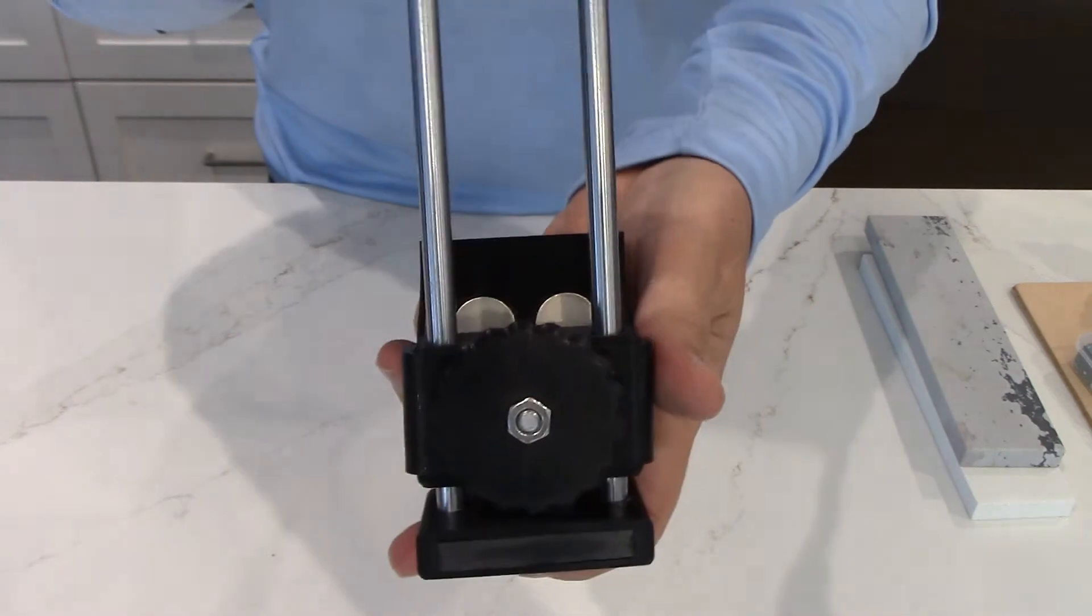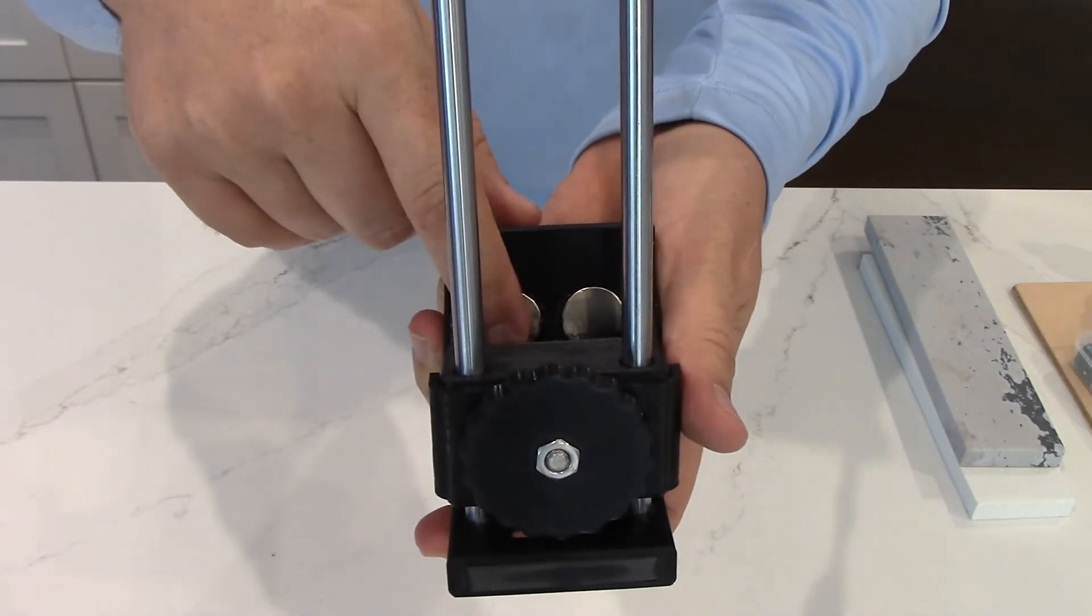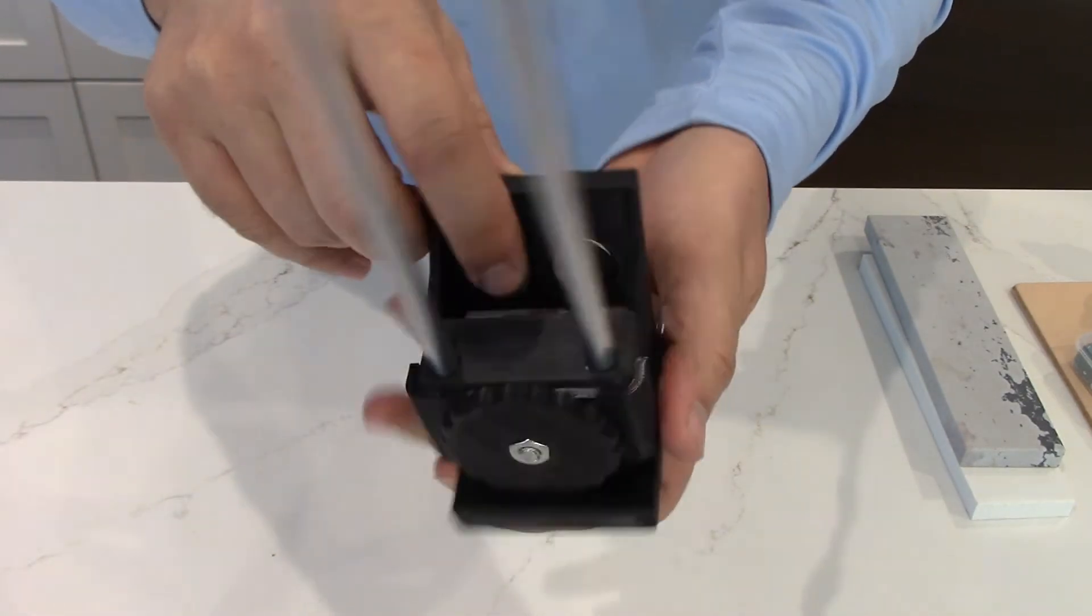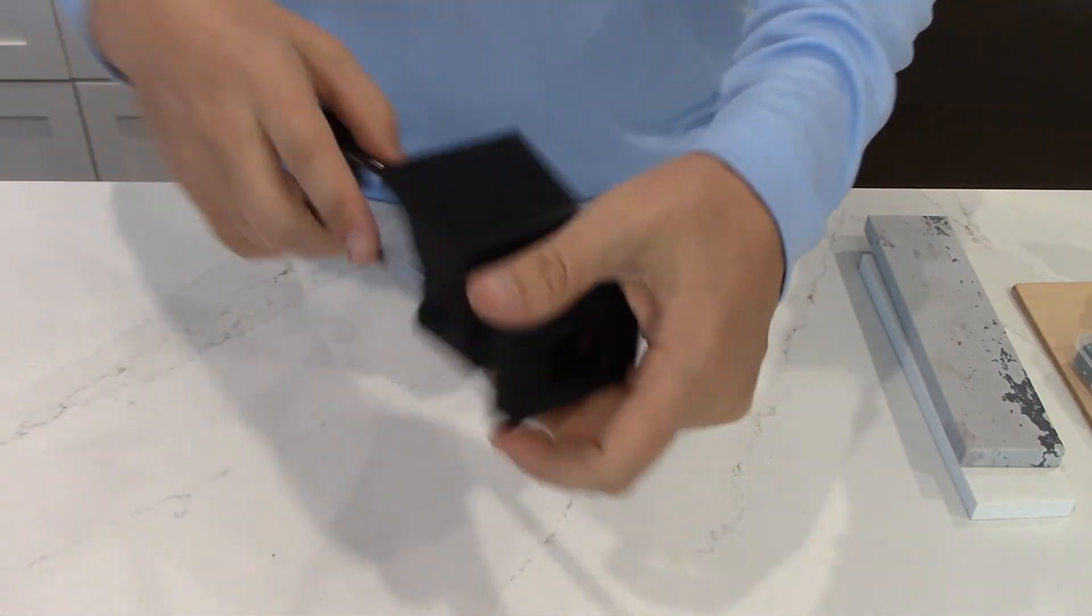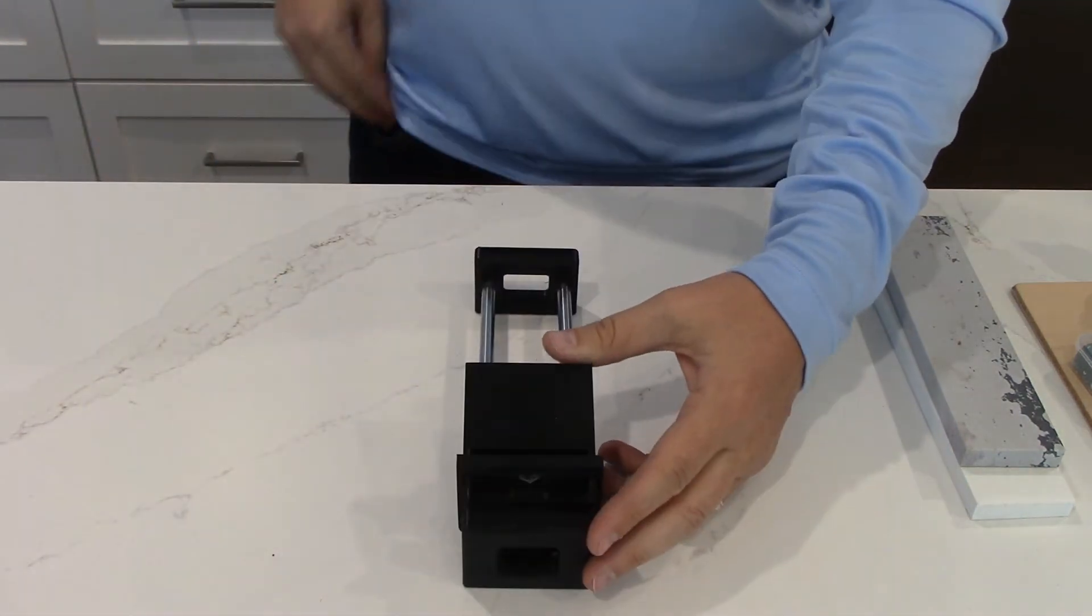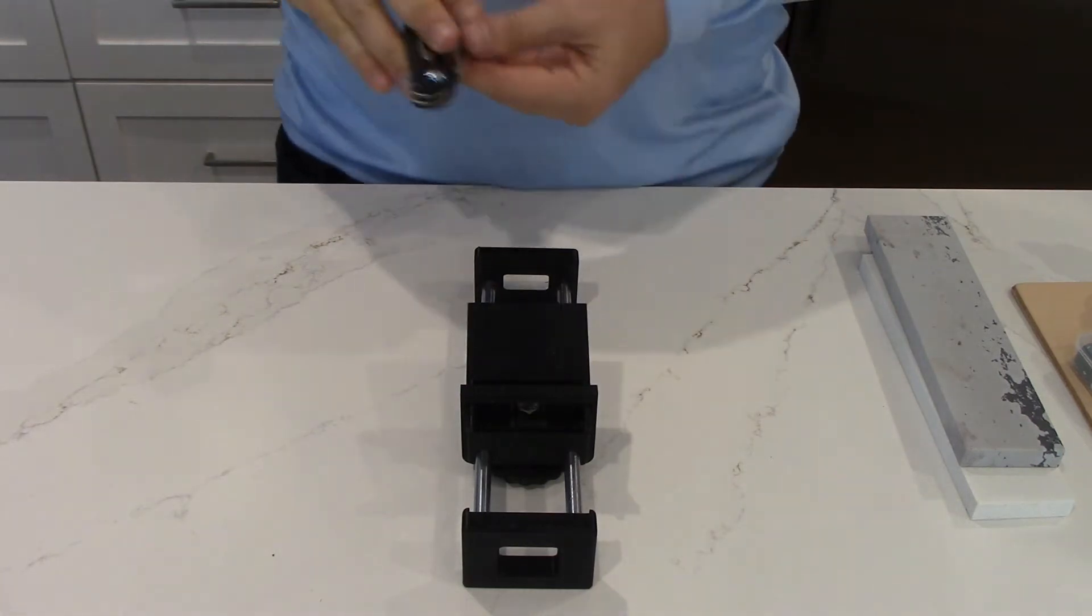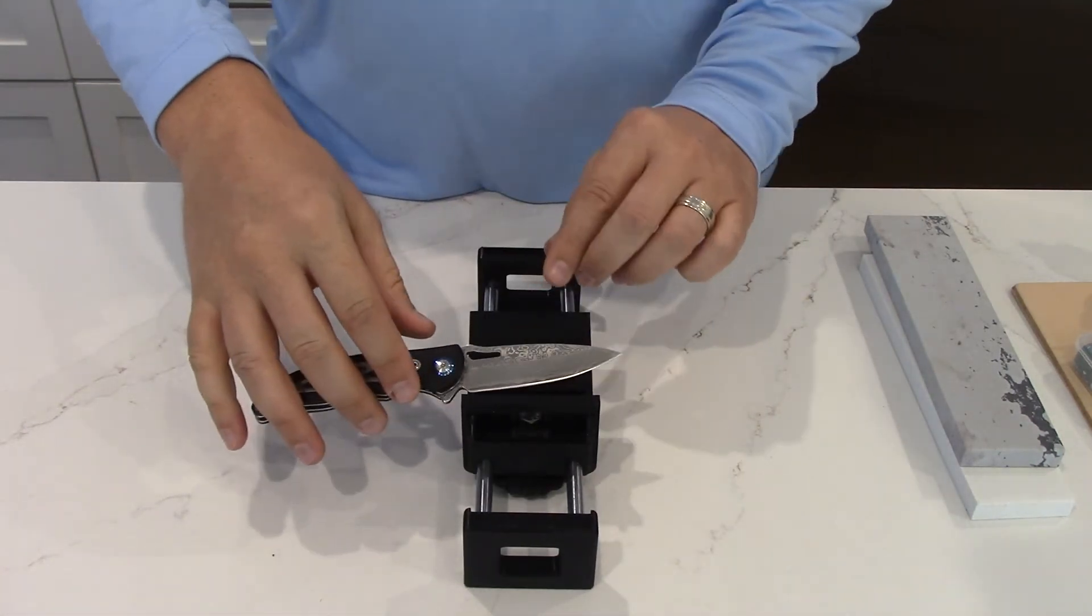One thing to notice on here is you can see two magnets under here, and these sit underneath the slide so that when you actually want to sharpen, it will hold your knife there.